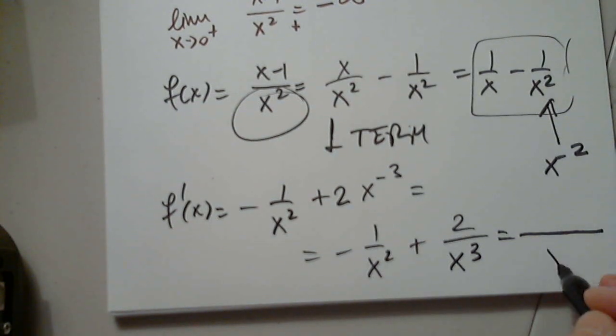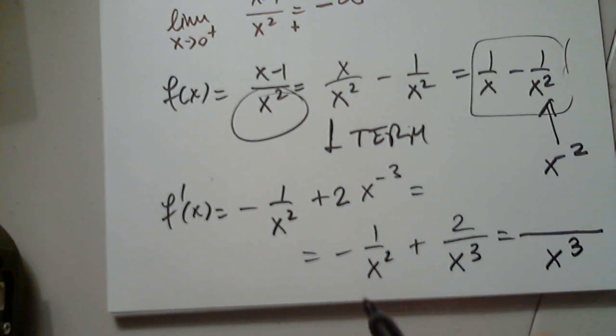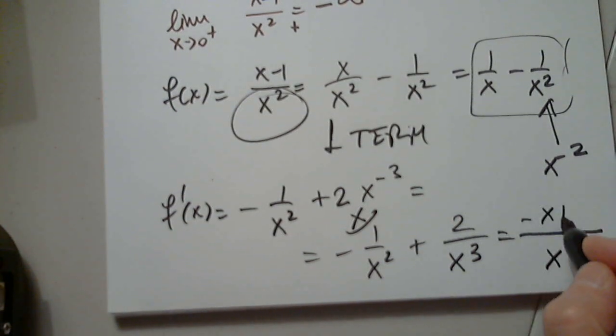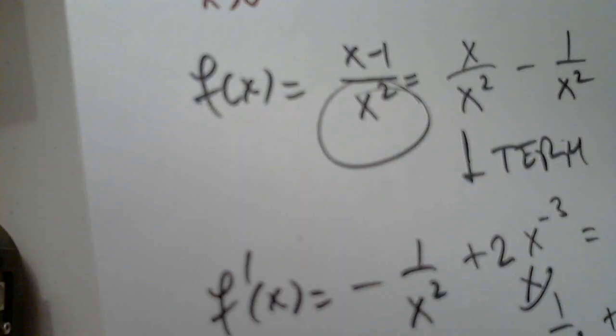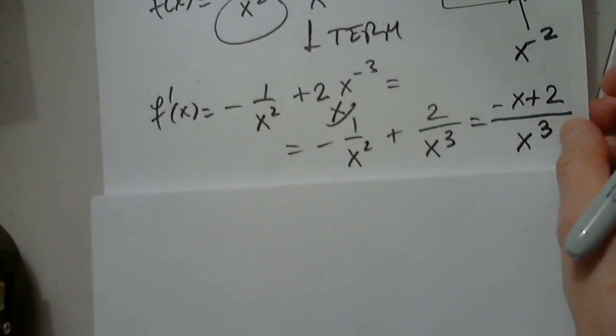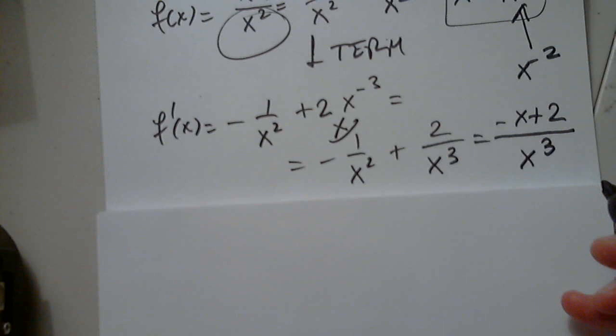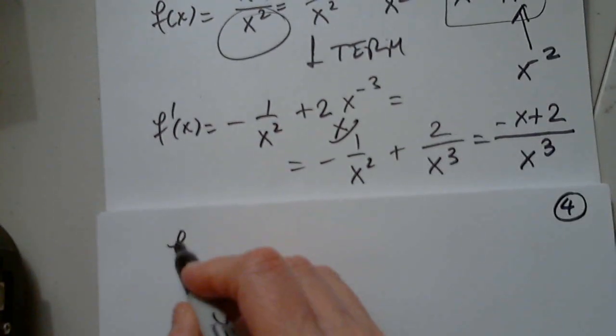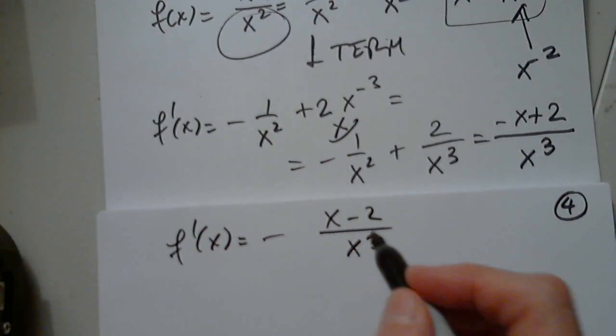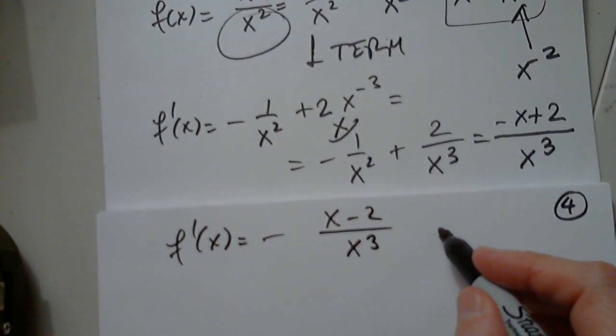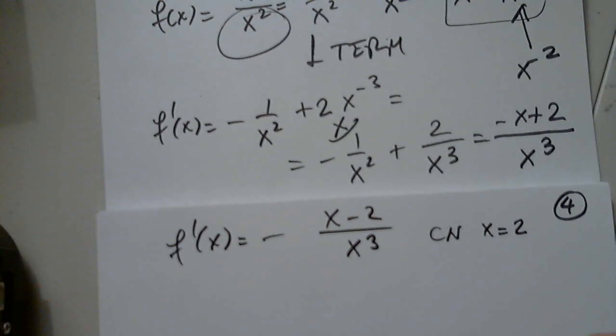Negative 1 over x squared plus 2 over x to the third. The least common denominator must be x to the third and this must be multiplied by x. So negative x plus 2. Yes, I will factor out negative 1 because it's easier to find the critical numbers. So then f prime of x equals negative x minus 2 over x cubed. And critical number is only x equals 2.